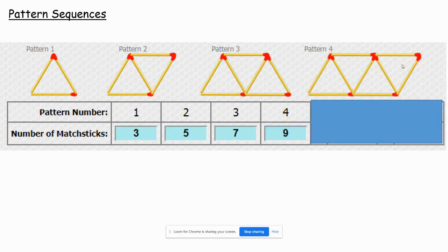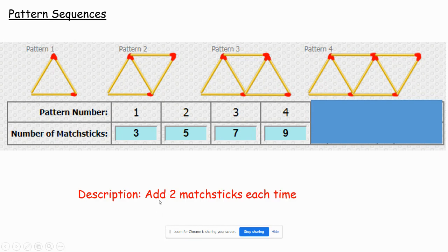And then when it comes to describing it we've got to describe in terms of to get to the next pattern how much more do we need in terms of matchsticks. And looking at the patterns you can easily see it's one more triangle. You might just assume well the triangle's got three matchsticks and therefore it's going to be an extra three matchsticks. But look at the numbers. The numbers it's plus 2, plus 2, plus 2. And it's because the next triangle you draw has already got one of the matchsticks in place for it. So you only need two extra matchsticks each time. So if you're asked to describe this pattern, this sequence, you'd be adding two matchsticks each time.